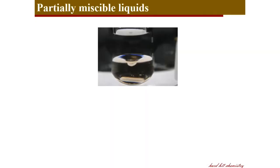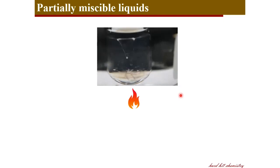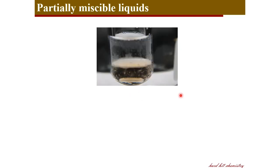Now let's consider partially miscible liquids like phenol and water. If you take phenol and water, you have two different phases — phenol forms the bottom layer and water the upper layer. But if you heat the system, as you increase the temperature, the two phases become miscible and you get only a single phase in your test tube. And if you cool it down gradually, with decreasing temperature, you can see the separation of two phases. At room temperature, the phenol phase and water phase are clearly and separately visible.